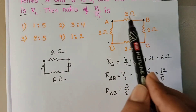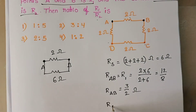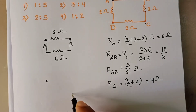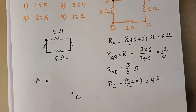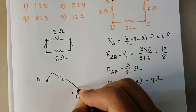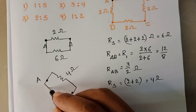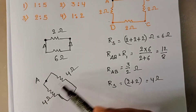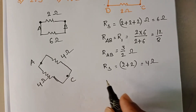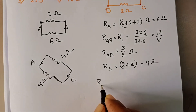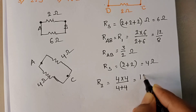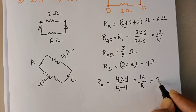These two resistors on each side are in series. The series resistance R_S equals 2 plus 2, which equals 4 ohm. So between A and C, there is a 4 ohm resistor on one side and a 4 ohm resistor on the other side, connected in parallel. R2 equals 4 into 4 by 4 plus 4, which is 16 by 8, equals 2 ohm.